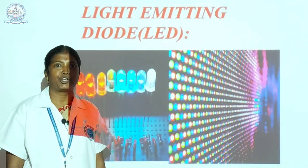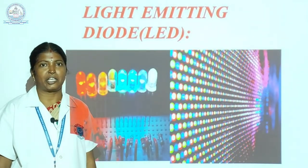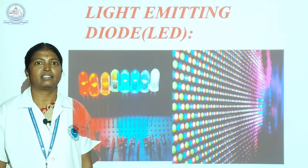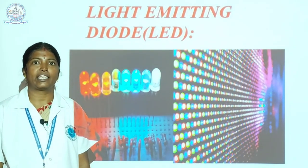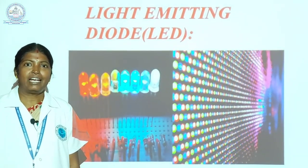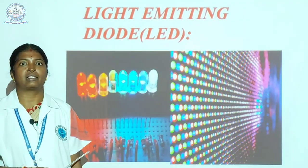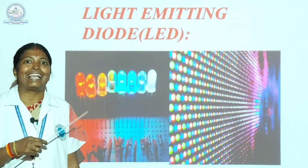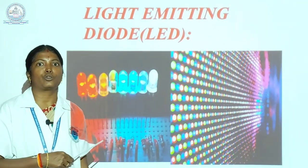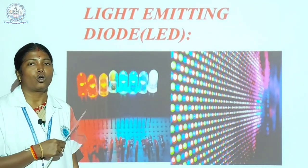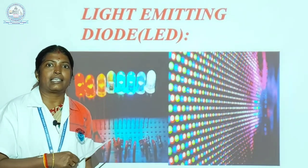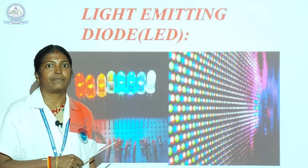First of all, we know about diodes. A diode is an electrical component that allows current in only one direction. When the junction is forward biased, electrons can easily move across the junction to fill in the holes, and current flows through the diode.